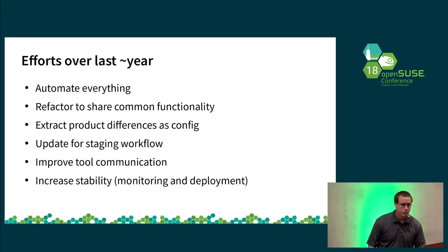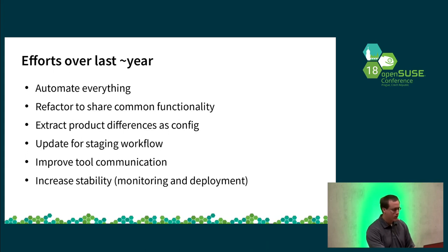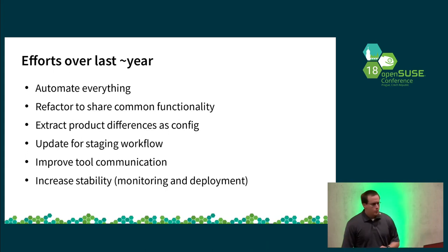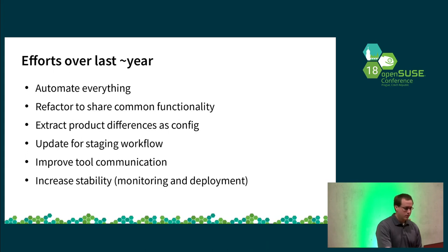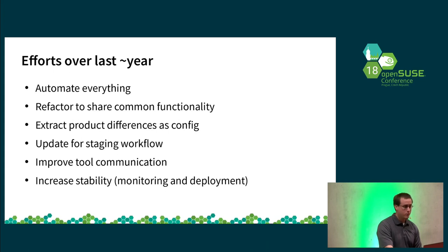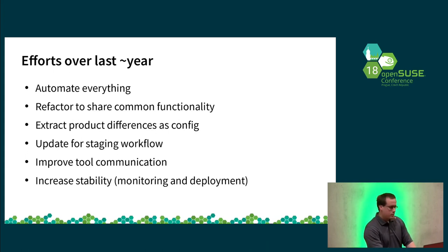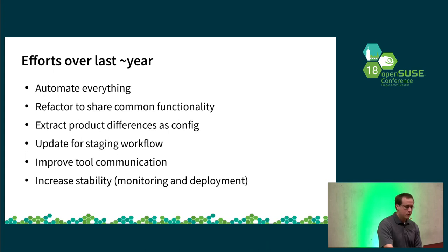A lot of the bots run in different modes on different products, implementing some policy on one product and not elsewhere. Basically trying to abstract that all as config switches rather than various other methods, so it's more easy to manage. One of the other goals has been improving tool communication. Certain things like the repo checker were not terribly transparent when they had issues — mostly the release team could look at logs and find out what was going on. Now there are comments dumped when it has problems. We've also been improving monitoring for services running outside OBS.